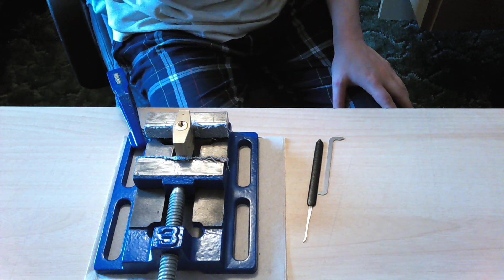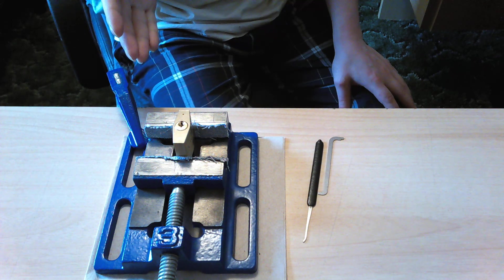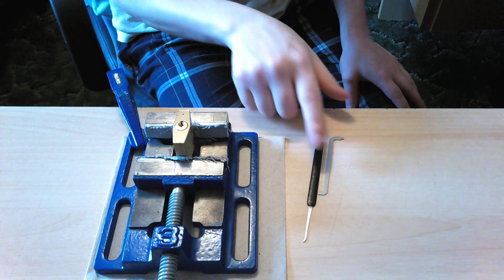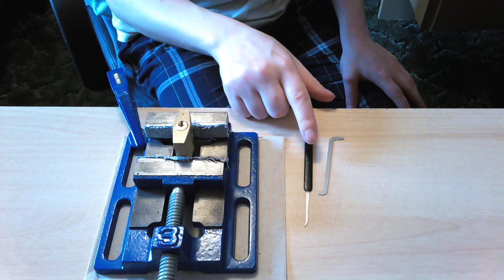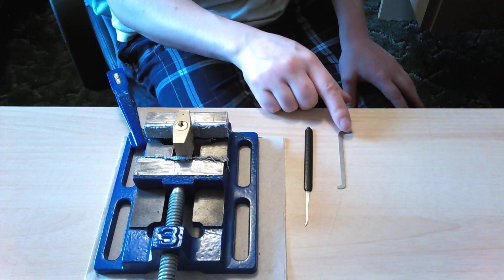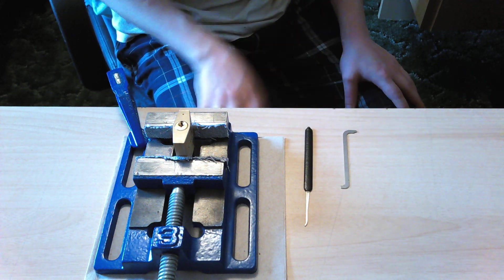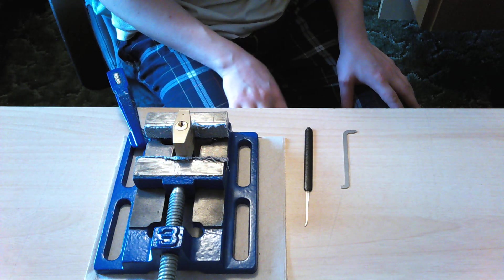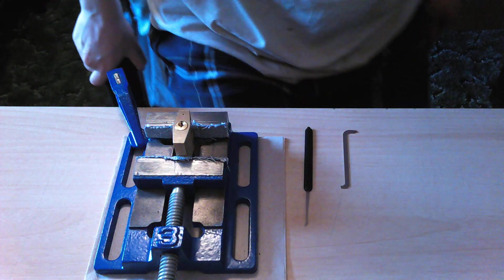Okay, today I'm going to pick an ABUS 6440 using this short hook in 0.6mm and this medium-sized 0.8mm atop the keyway tension wrench. Both these are Sparrows.